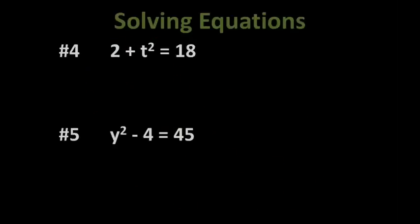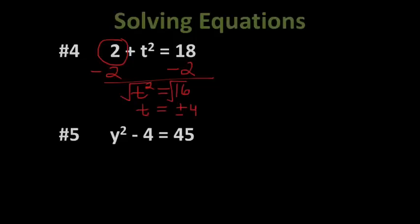Now this one has a little bit of work to do. We can follow those steps. We simplify each side. I've got nothing to simplify in number 4. So now I want to eliminate anything that's with my t squared. That's this 2, it's a positive 2. So I'm going to subtract 2 from both sides. And I get t squared equals 16. Take the square root of each side, and I get t equals positive or negative 4.